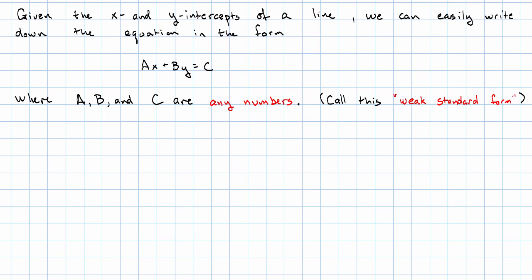If we know the x and y intercepts of a line, we can easily write down its equation in a form that looks like standard form, except that the numbers A, B, and C don't need to follow those three restrictions. They might not be integers, they might have common factors, A might be positive. We'll call this weak standard form. In a later lesson, we'll learn how to go from this weak standard form to actual standard form where A, B, and C follow all three of those rules.